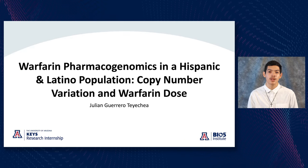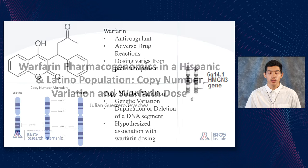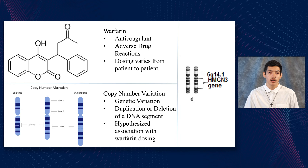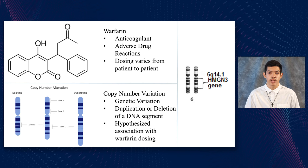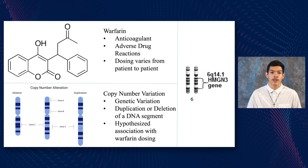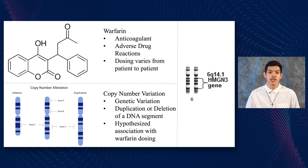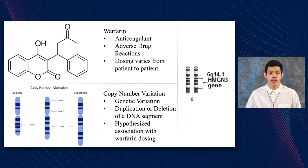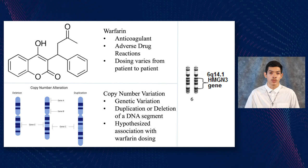Hi, my name is Julian and this summer I worked in the Carnes lab at the College of Pharmacy, studying how someone's genes affect how they respond to medication — classified as pharmacogenomics. The drug we looked at was warfarin, an anticoagulant or blood thinner that is very commonly used, but with downsides including adverse drug reactions and highly variable dosing from patient to patient.